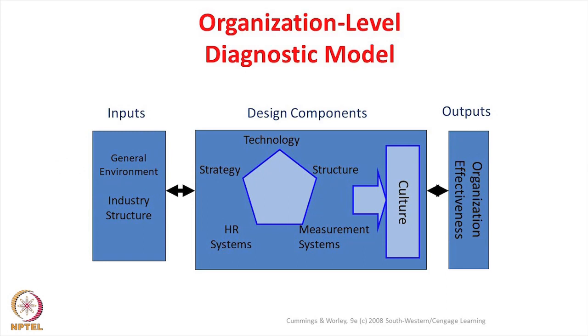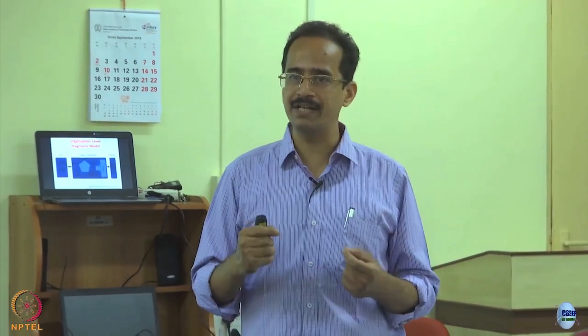Let us look at how organization as a diagnostic system may look like. If we superimpose the systems model over an organization, what we see is input, design components, and output. The input for an organization is the general environment where it is operating and the industry structure. If we only keep looking at the industry structure and do not look at the general environment, we may lose many business opportunities. Many banks were not able to think that competition might not come from another bank — competition could come from a telecommunication company.